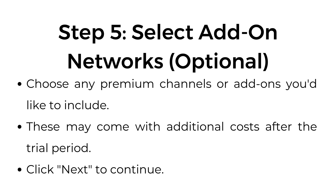Step number five: select add-on networks. This is optional. Choose any premium channels or add-ons you would like to include. These may come with additional costs after the trial period. Click next to continue.